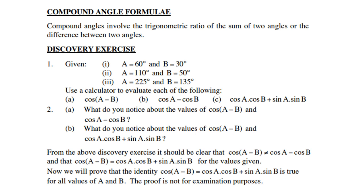What do you notice about the values of cos(A minus B) and cos A minus cos B? You will notice that they are different. And what do you notice about the values of cos(A minus B) and cos A cos B plus sin A sin B? From the above discovery exercise, it is clear that cos(A minus B) is not equal to cos A minus cos B, and that cos(A minus B) is the same as cos A times cos B plus sin A times sin B for the given values.